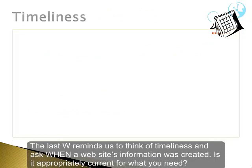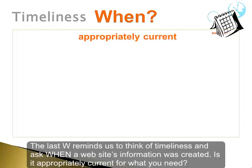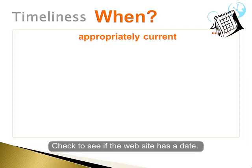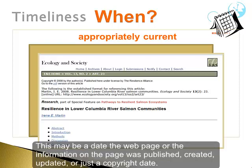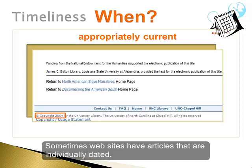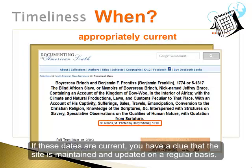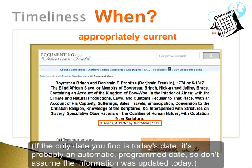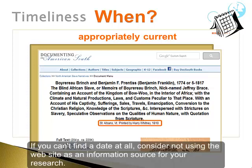The last W reminds us to think of timeliness and ask when a website's information was created. Is it appropriately current for what you need? Check to see if the website has a date — this may be a date the web page or the information on the page was published, created, updated, or just a copyright date. Sometimes websites have articles that are individually dated. If these dates are current, you have a clue that the site is maintained and updated on a regular basis. If the only date you find is today's date, it's probably an automatic programmed date, so don't assume the information was updated today. If you can't find a date at all, consider not using the website as an information source for your research.